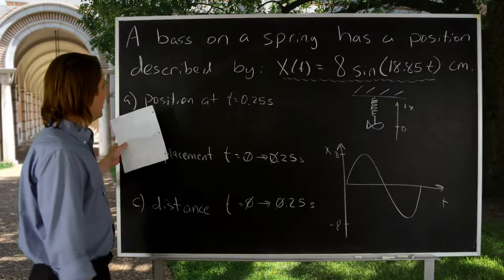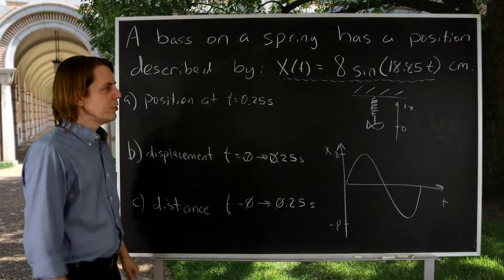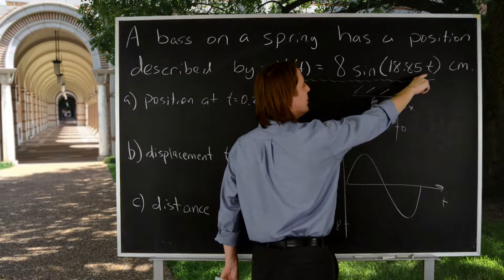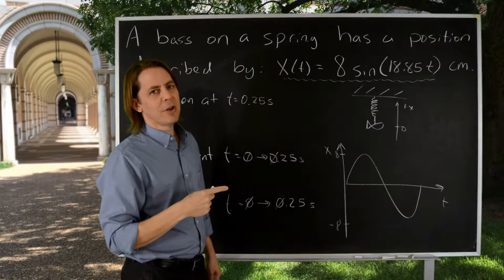Okay, so here we go. A, what is the position at t equals 0.25 seconds? Okay, for that you could basically just plug in and get it. If you plug in 0.25 here, you actually get negative one. I set up 18.85 on purpose. That's six times pi.